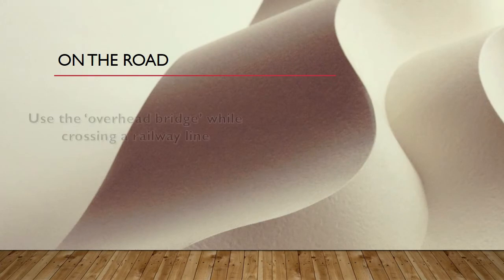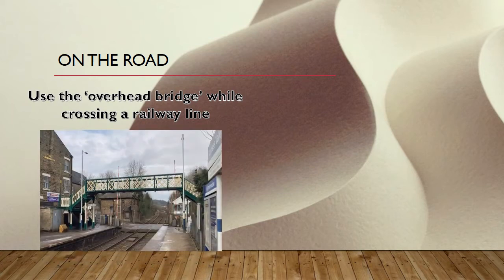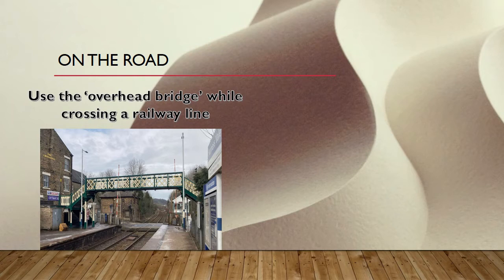Next rule: use the overhead bridge while crossing a railway line. When you cross a railway line, use the overhead bridge — otherwise a train will come and hit us. The spelling of bridge is B-R-I-D-G-E. Don't use the railway line to cross; use the overhead bridge to avoid accidents.